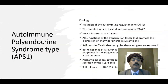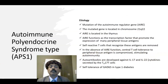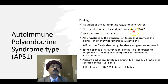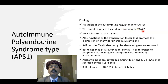What is the etiological cause of autoimmune polyendocrine syndrome type 1? It is caused by mutation of the autoimmune regulator gene, also called AIRE. The mutated gene is located on chromosome 21q22, and it is an autosomal recessive disease.